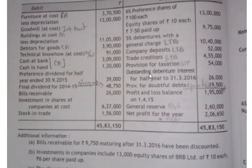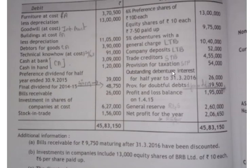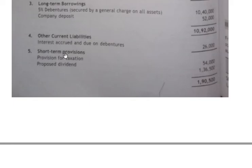Other current liabilities working note: from the credit side, outstanding debenture interest for half year is twenty-six thousand — this is interest accrued and due on debentures, which is twenty-six thousand.